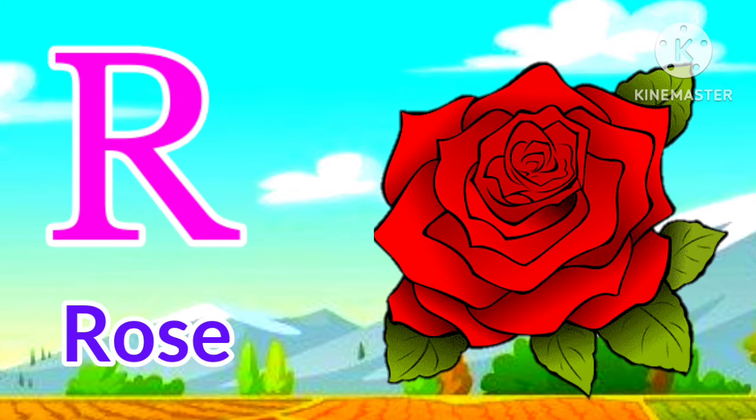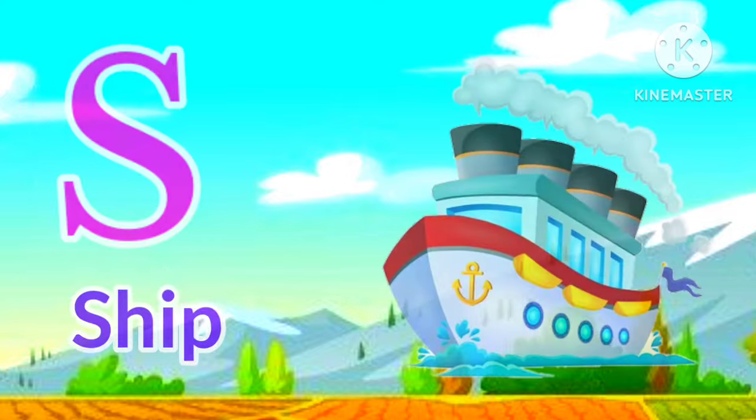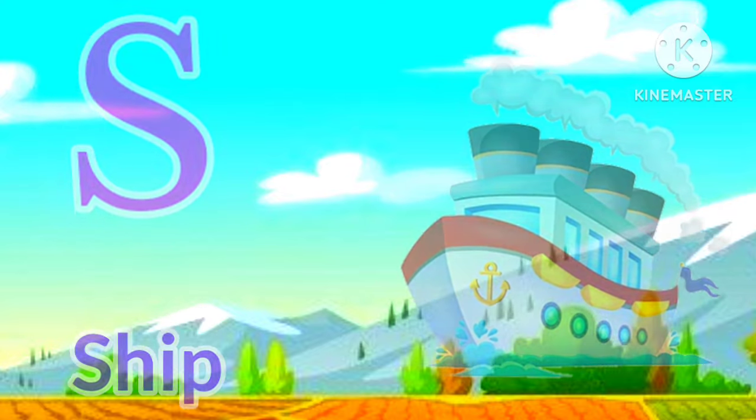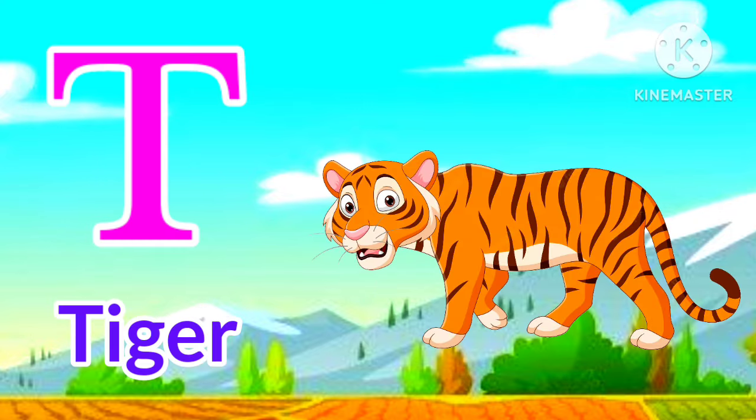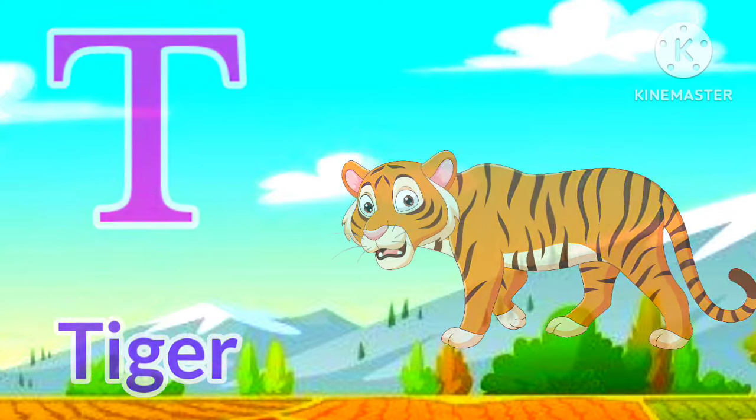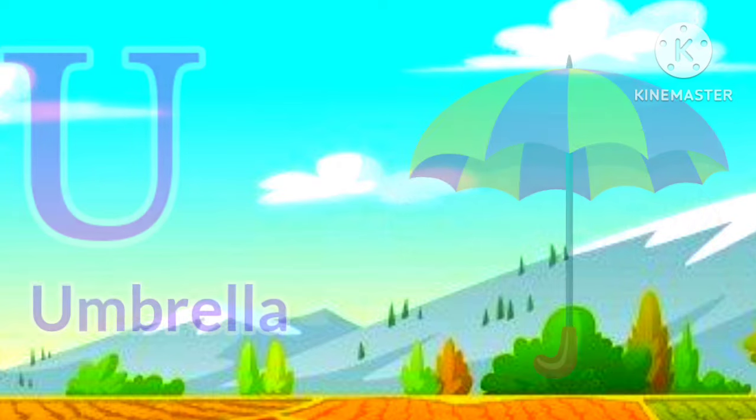R for rose, rose means gullab. S for sheep, sheep means jahaj. T for tiger, tiger means bug.